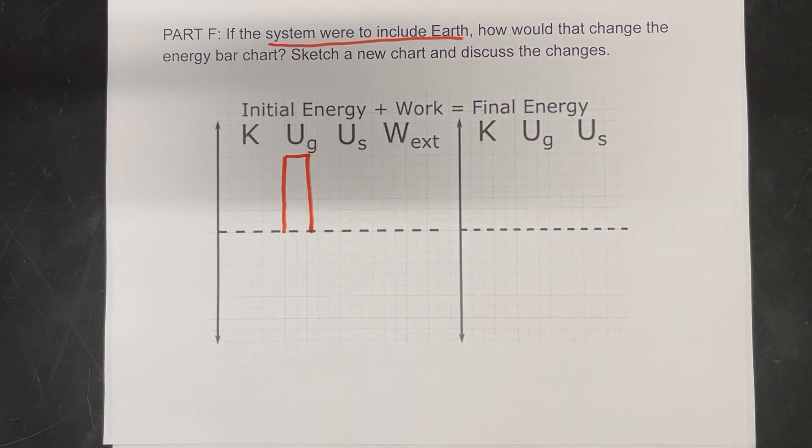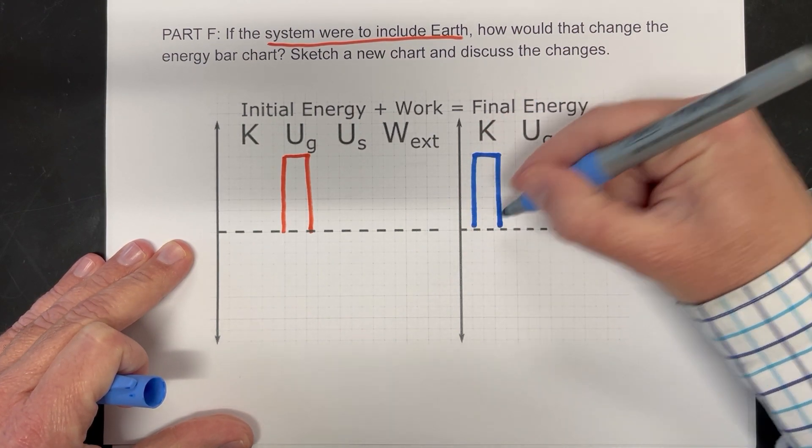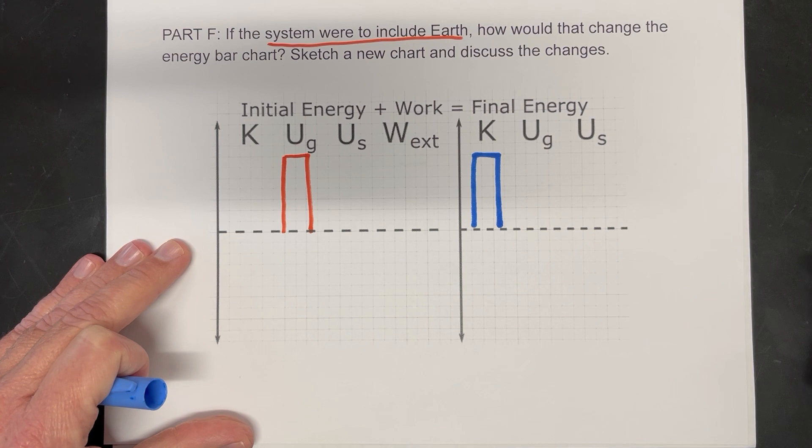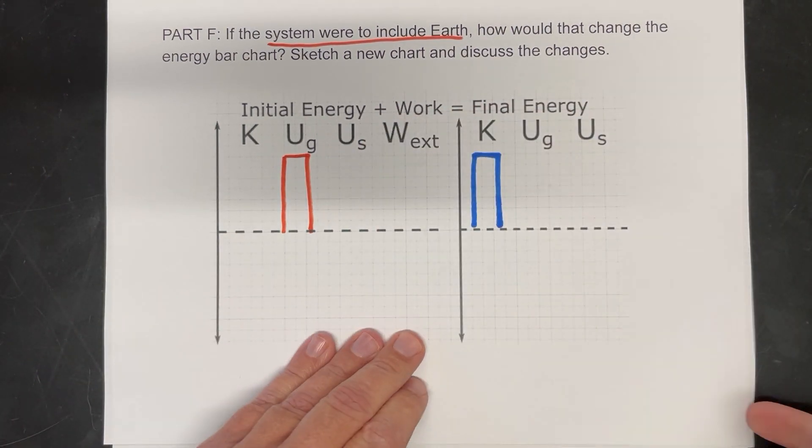And then over here, that gravitational potential energy once again becomes something else. It becomes kinetic energy there. And so we've sort of swapped out external work for gravitational potential energy.